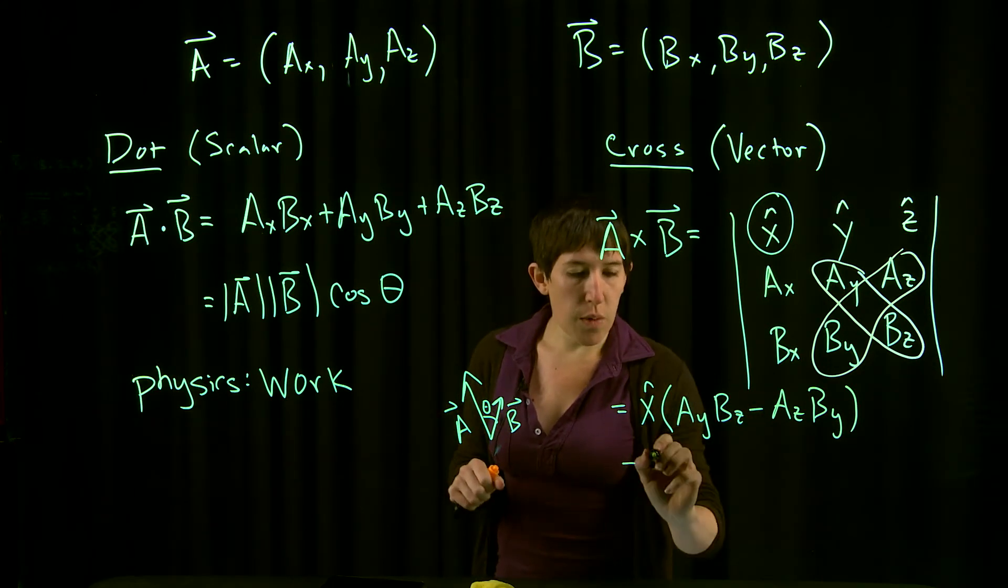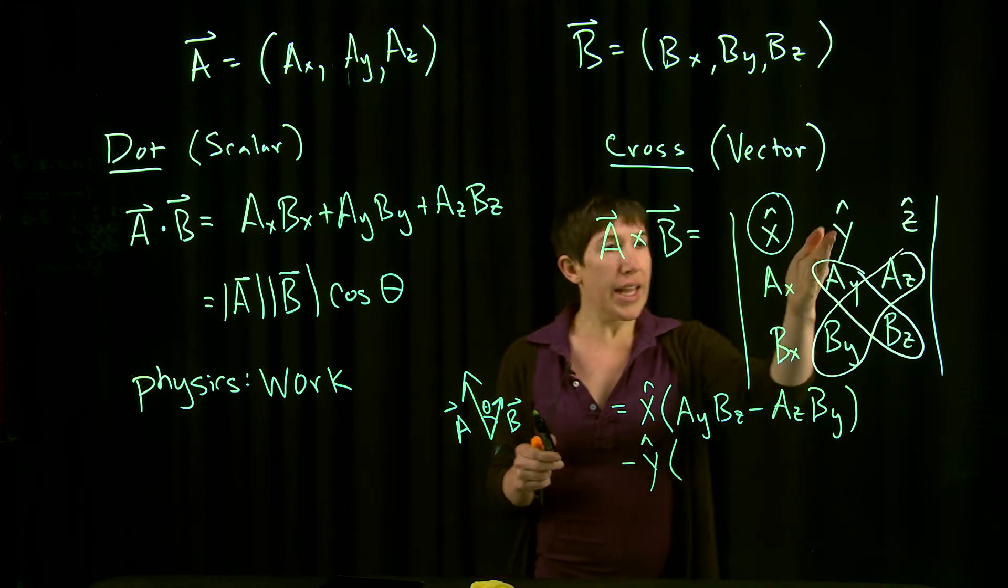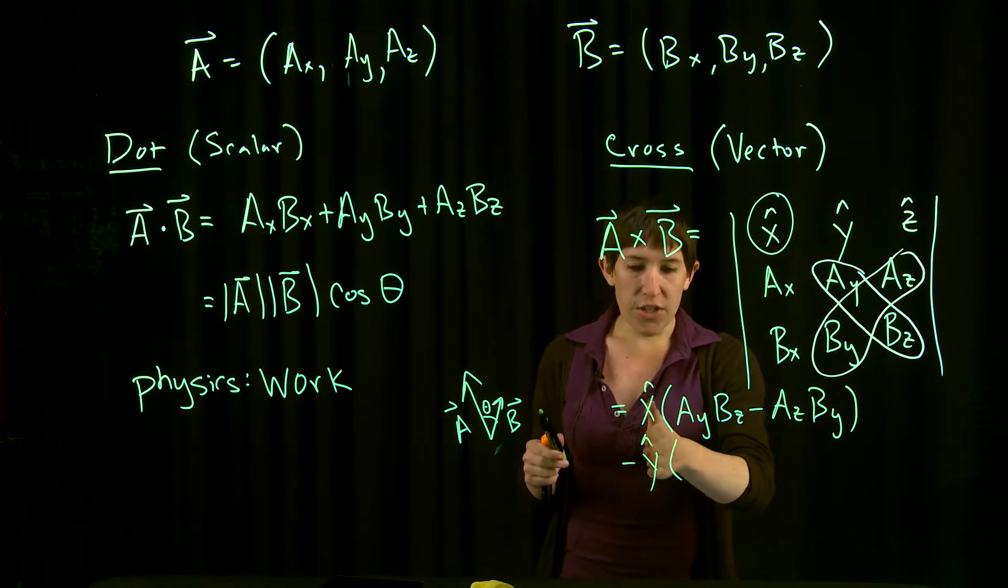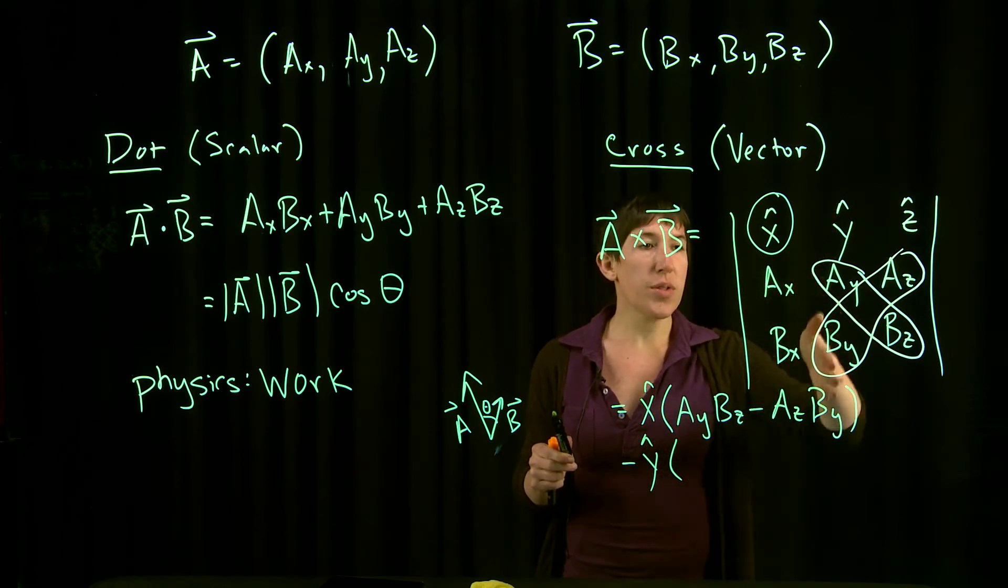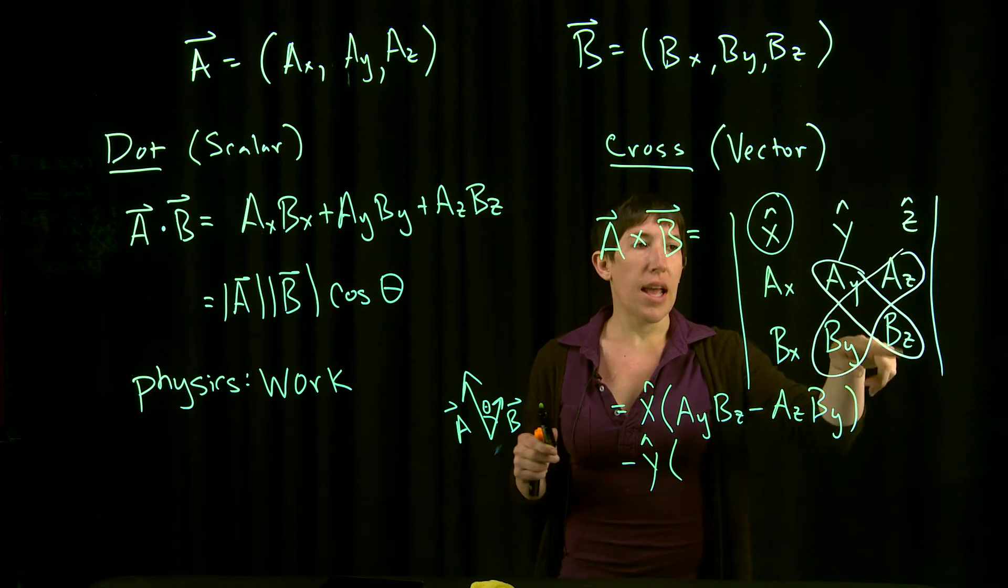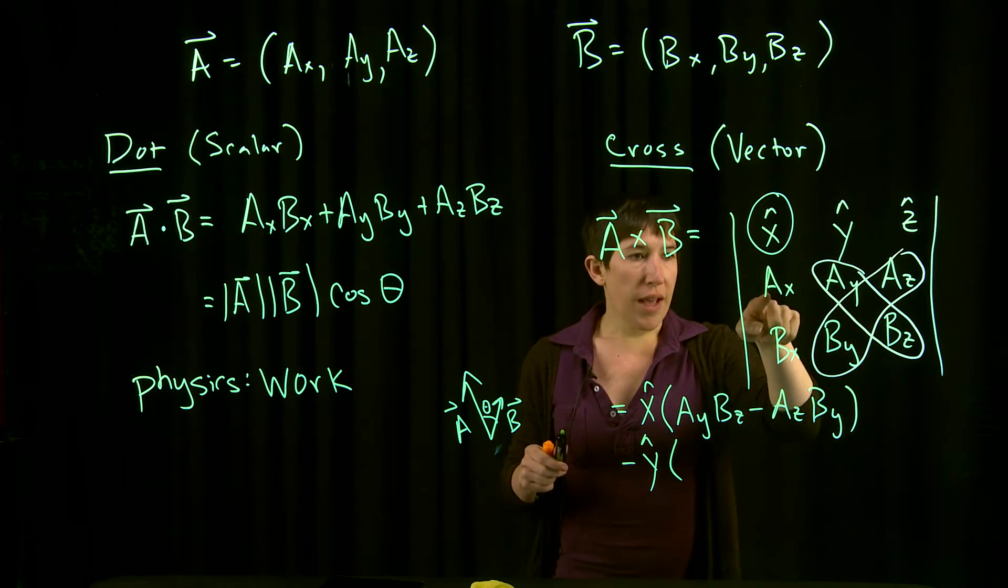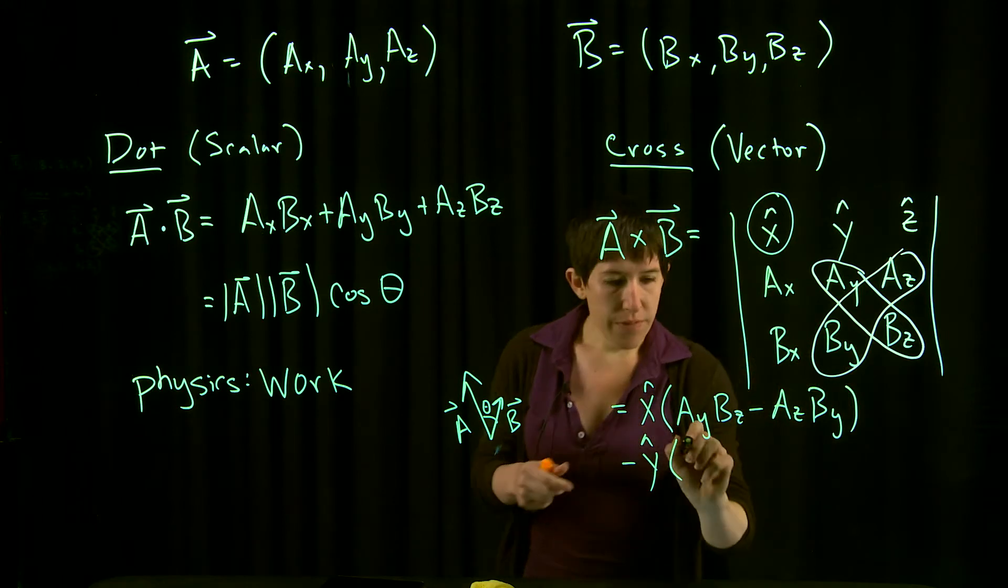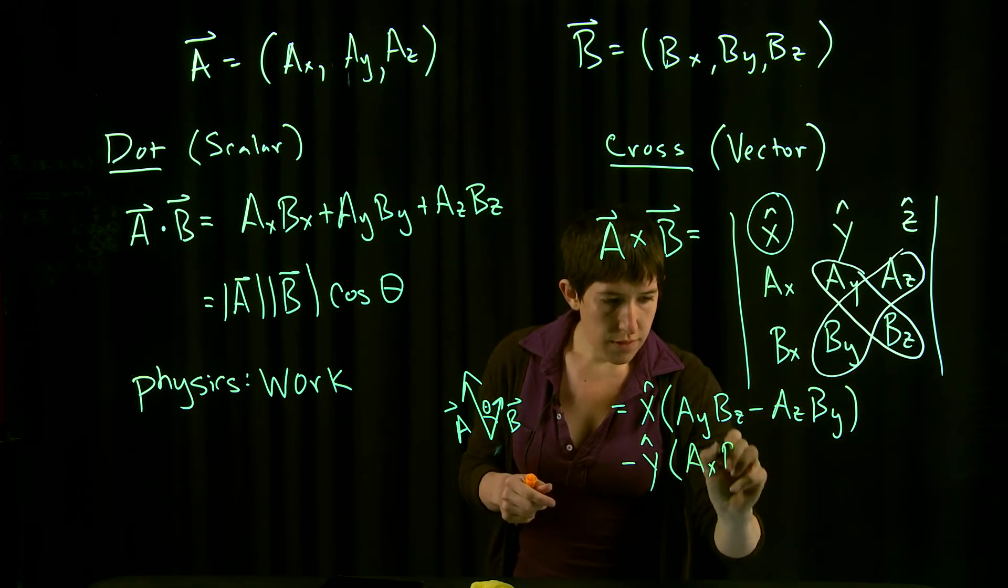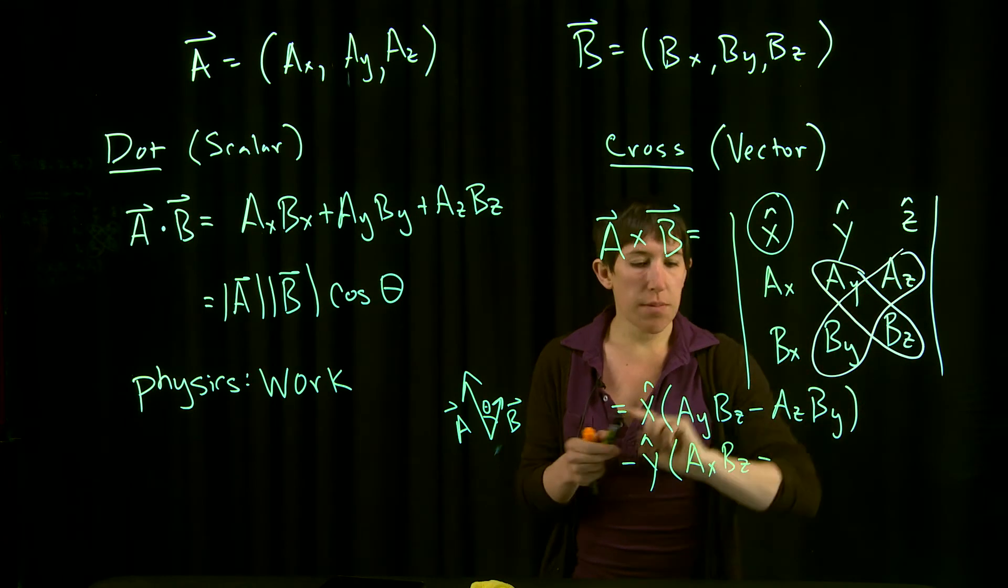Then the next term you always subtract, and now we start with y-hat. For the y-hat direction piece, we don't use the y components of the original vectors. Instead we use x and z. So we have y-hat times (Ax*Bz - Az*Bx).